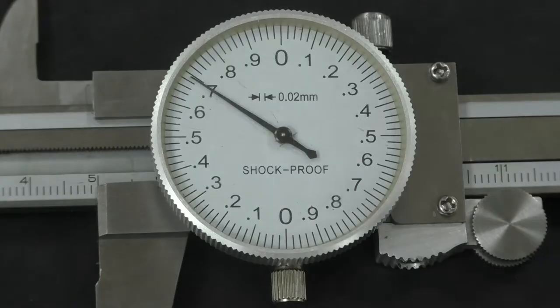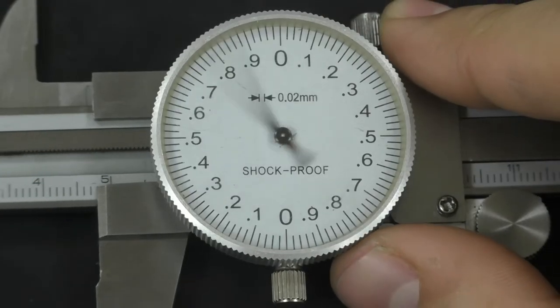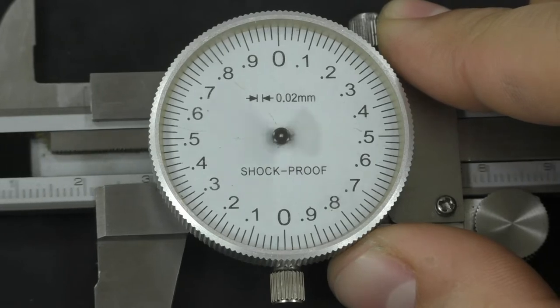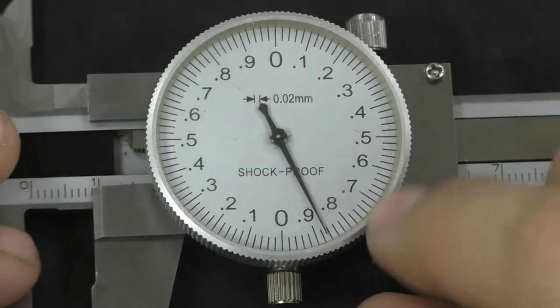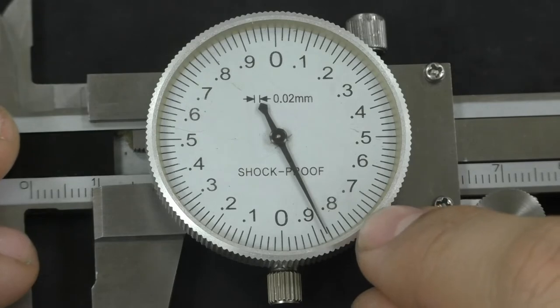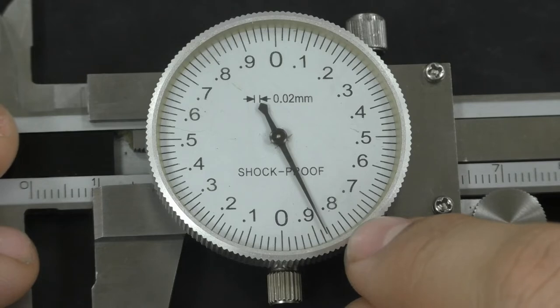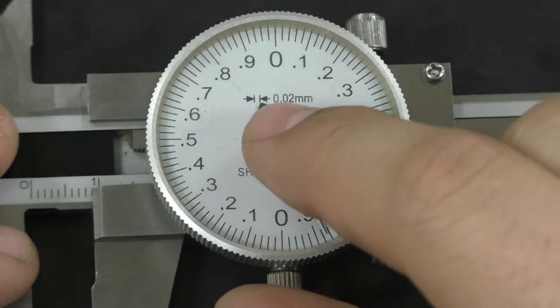You'll notice that, as I move the jaws around on the caliper, the needle on the dial moves as well. The numbers on this dial represent tenths of the millimeter on the ruler, while the ticks in between these numbers represent 0.02 millimeters, as you can see written on this dial.